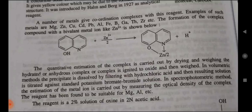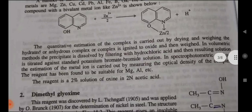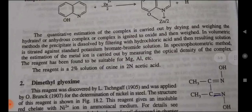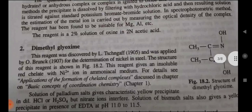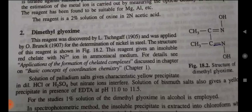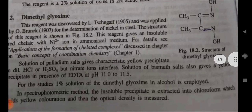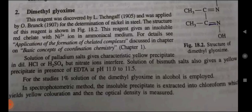In the spectrophotometric method, estimation of the metal ion is carried out by measuring the optical density of the complex. The reagent has been found suitable for magnesium and aluminium, and is prepared as a 2% solution of oxine in acetic acid. Second — Dimethylglyoxime: this reagent was discovered by Tschugaev and applied by O'Brien in 1907 for the determination of nickel in steel. Its structure is shown in figure 18.2. This reagent gives an insoluble red chelate with nickel ions in a weakly acidic medium. Solutions of palladium salts give a characteristic yellow precipitate in dilute HCl or H2SO4. Bismuth salt solution also gives a yellow precipitate in the presence of the reagent at pH 11 to 11.5.